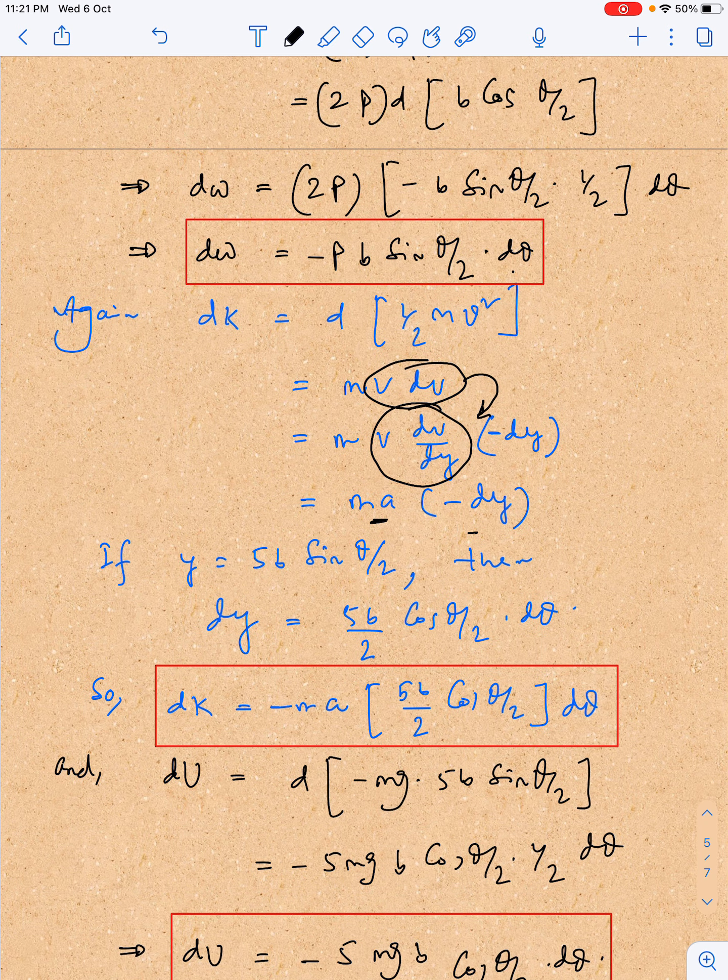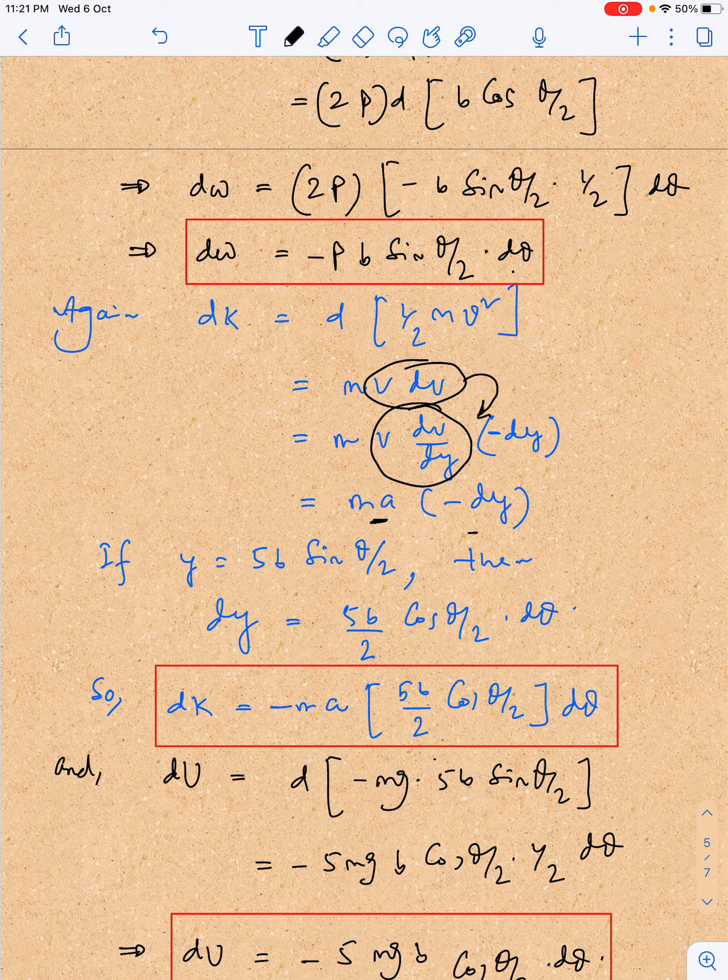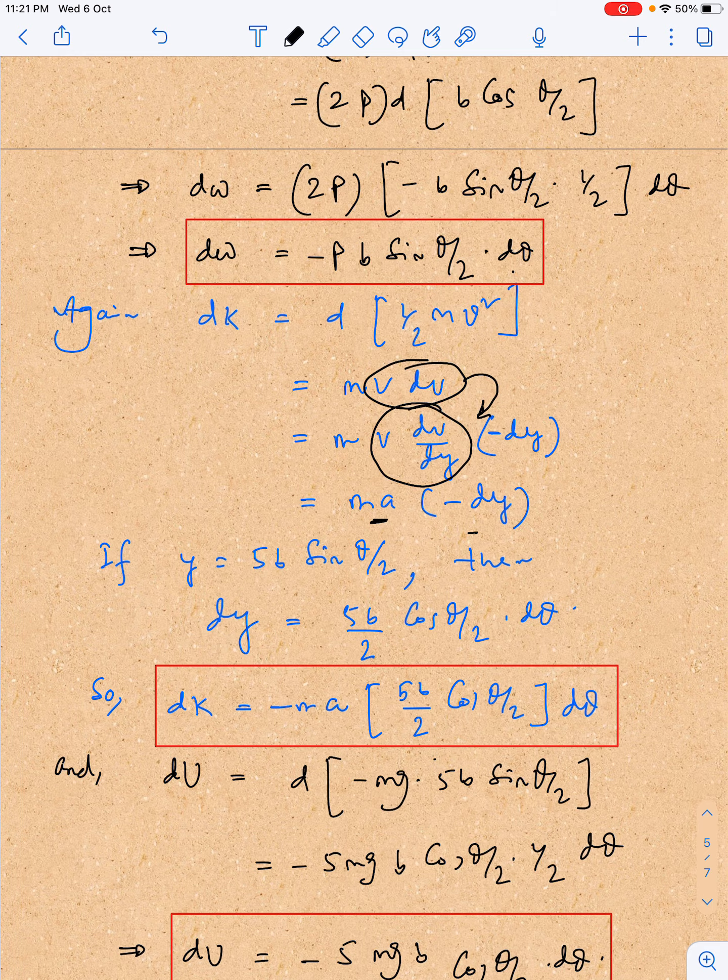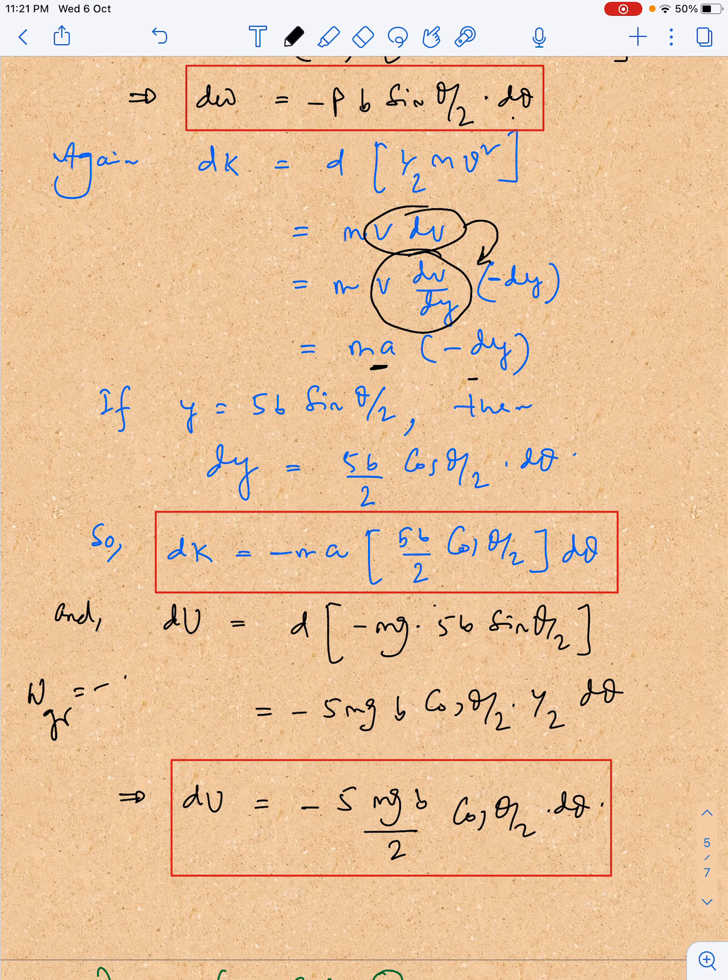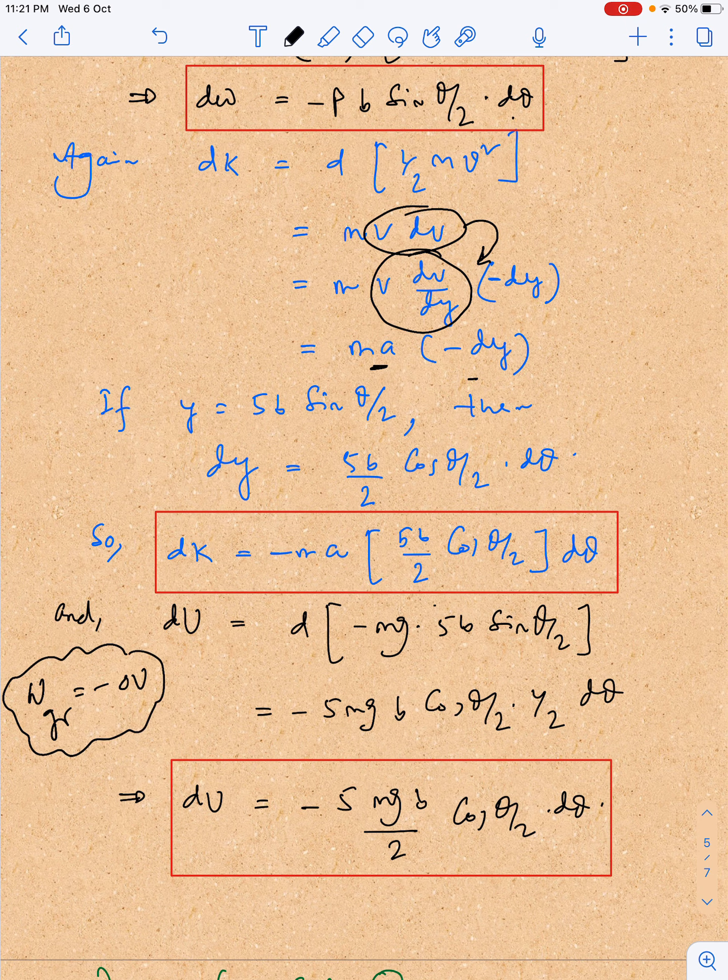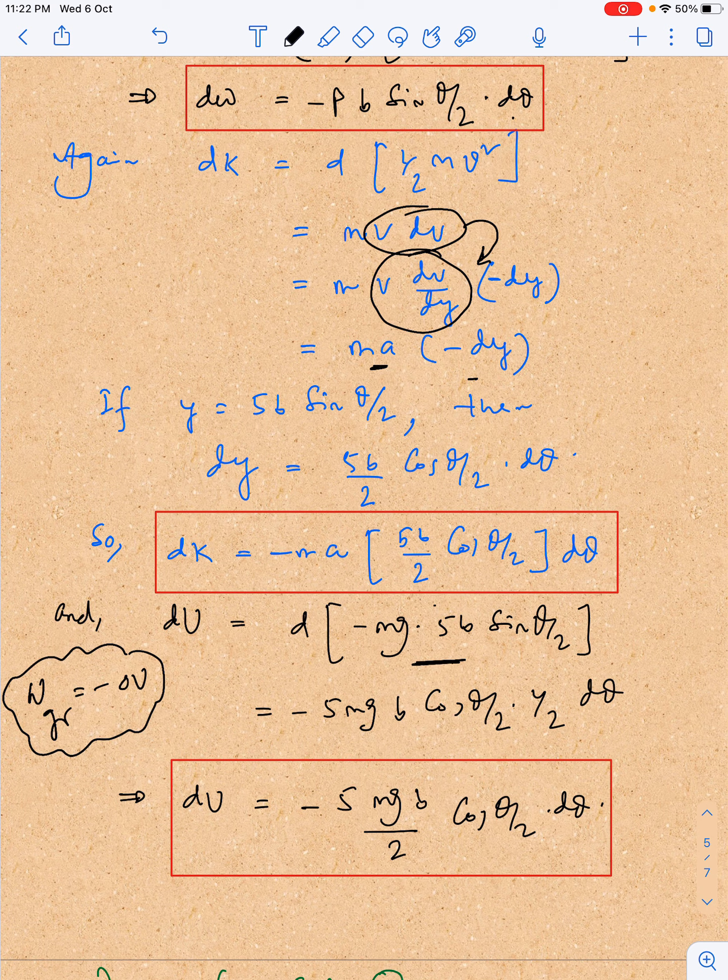Work done by gravity can be calculated as we know that work done by gravity is equal to negative of change in potential energy, because gravity is a conservative force. So I am just writing minus du equals d of minus mgb sin theta by 2, because u equals mgy. So du will equal mg dy. After substituting the values here, there will be some calculation.